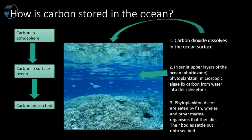Carbon comes to be in the upper oceans by the process of diffusion. Carbon diffuses from the ocean surface into the oceans, and that process is key for life in the upper oceans where there is light. In the sunlit upper layers, phytoplankton and other algae fix carbon into their skeletons.